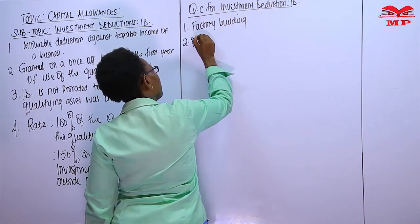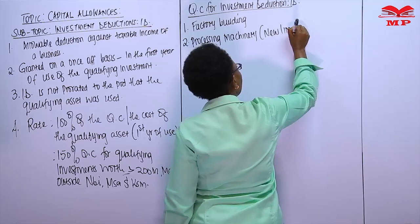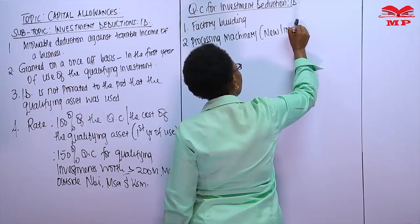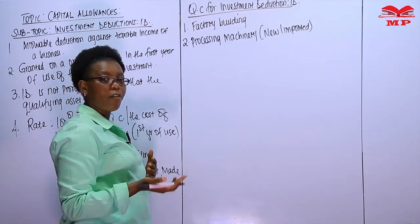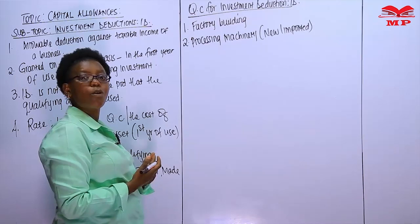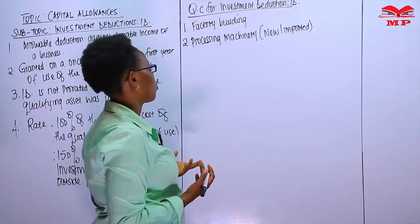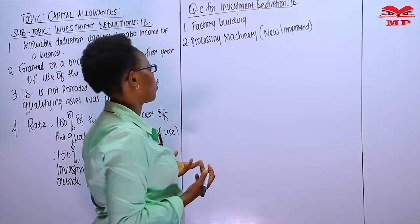Number two is processing machinery — new or imported. If we put up a factory building without processing machinery, we cannot convert raw materials into finished products. According to the second schedule of the Act, a factory building is a building used to convert raw materials into finished products, and this machinery helps in that conversion process.